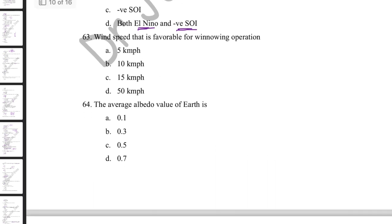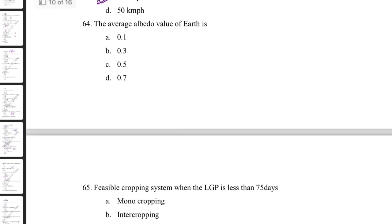Which condition favors deficit rainfall in India? El Niño and a negative Southern Oscillation Index both favor deficit rainfall. Wind speed favorable for winnowing operations is at least 15 km/h. The average albedo value of Earth is 0.3 — meaning 30% of incoming radiation is reflected back without energy loss.